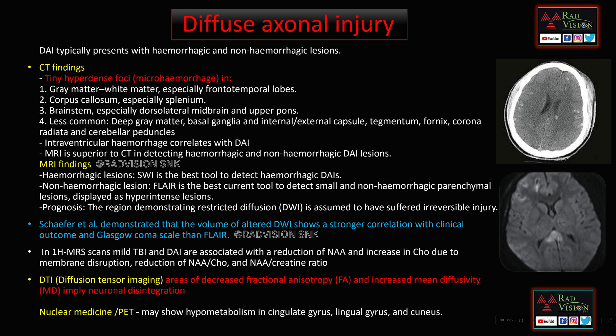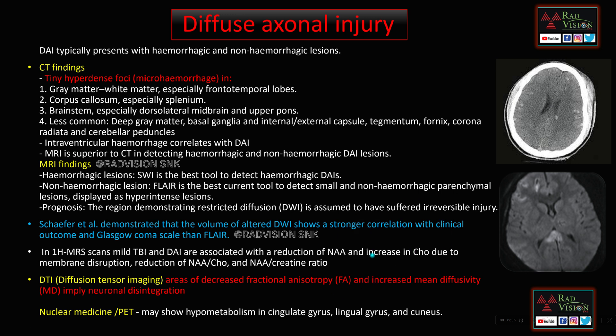In 1H MRS, mild TBI and DAI are associated with reduction of NAA and increase in choline due to membrane disruption, reduction of NAA/choline and NAA/creatine ratios. On DTI, there are areas of decreased fractional anisotropy and increased mean diffusivity, implying neuronal disintegration. Nuclear medicine or PET scans may show hypometabolism in the cingulate gyrus, lingual gyrus, and cuneus.